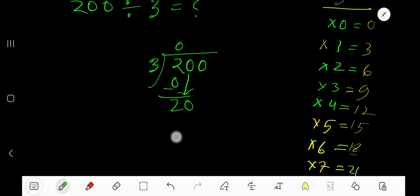3 goes into 20 how many times? 7 times is 21, so 6 times. Write 6. 6 times 3 is 18. Subtract. Bring down this digit.